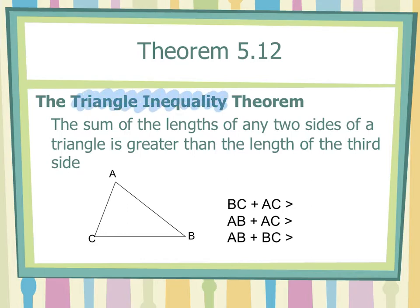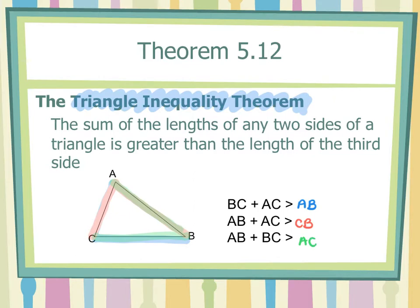The triangle inequality theorem says the sum of the lengths of any two sides of a triangle is greater than the length of the third side. So if I add BC and AC, it has to be greater than AB. If I add AB and AC, it has to be greater than CB. And if I add AB and BC, it has to be greater than AC. The sum of any two sides has to be greater than the length of the third side. Note: segment names like AB or BA are the same segment, order doesn't matter.